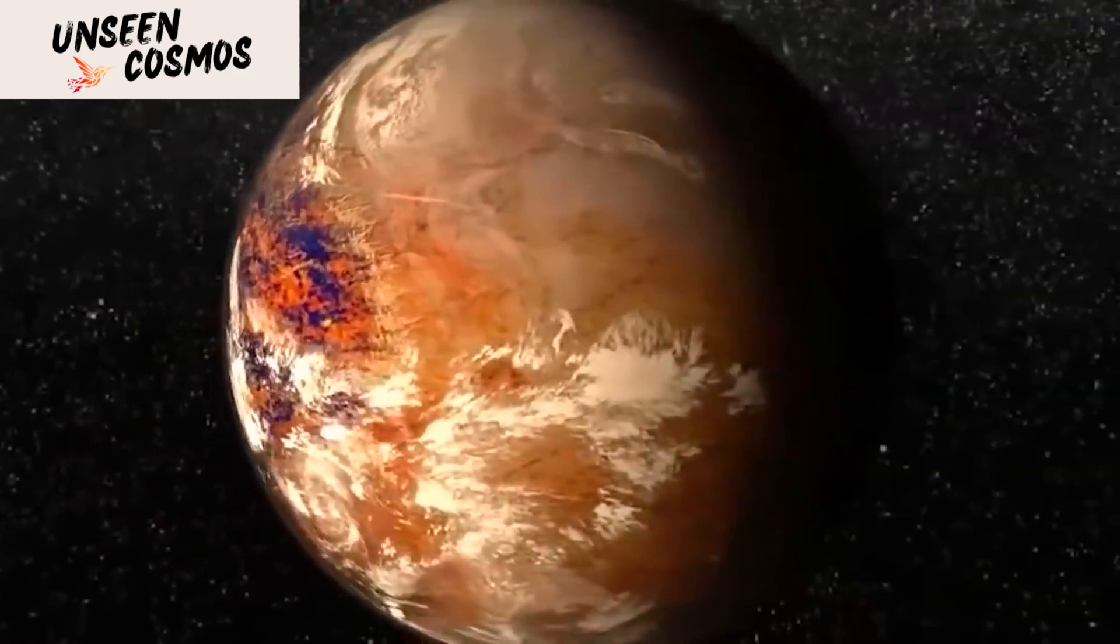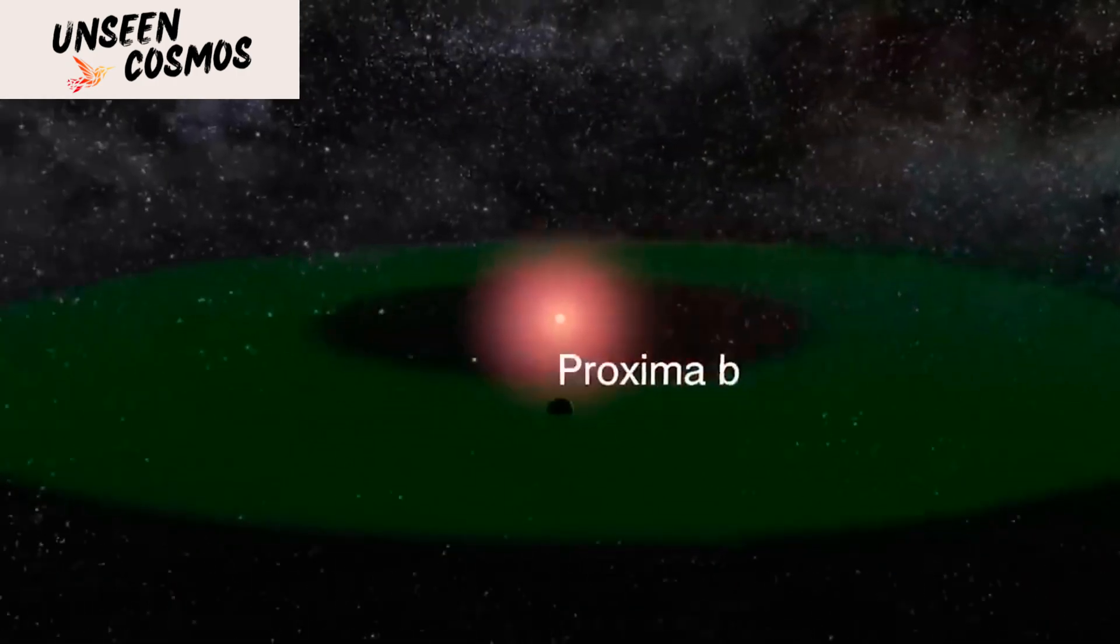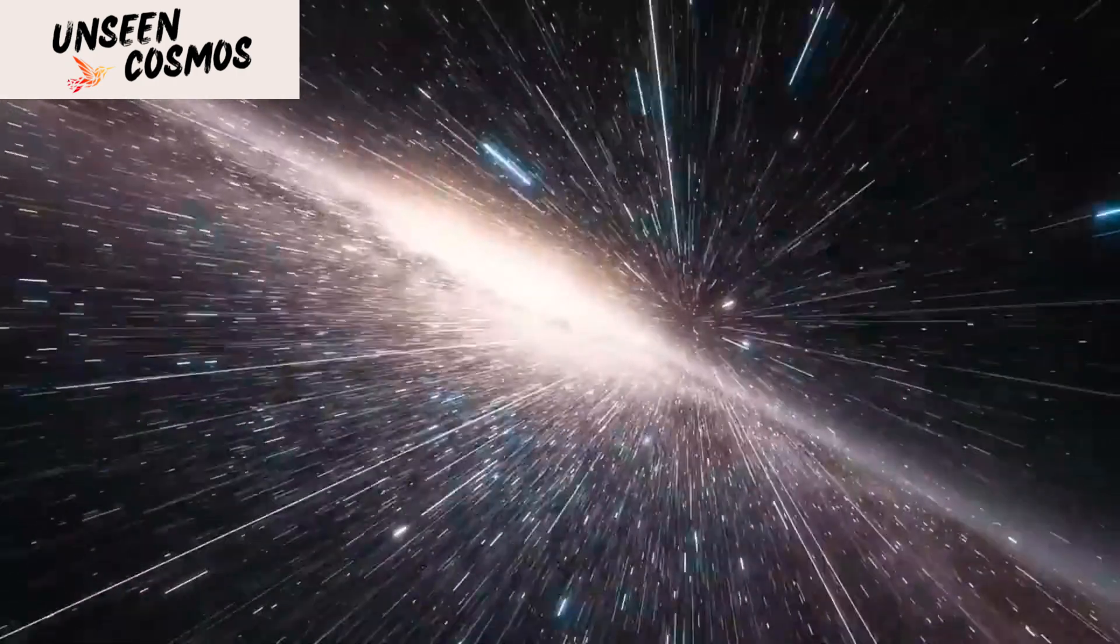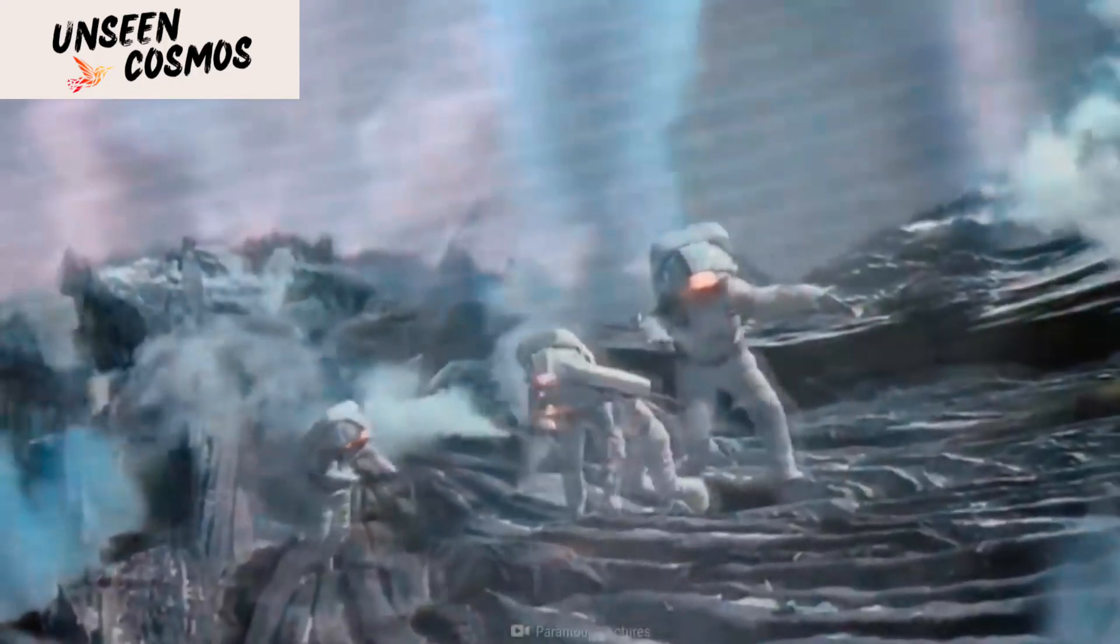It is important to note that this is just a simulation, and there is currently no direct evidence that there is an alien civilization on Proxima b. However, the possibility of detecting artificial light on exoplanets is an exciting prospect, as it could provide evidence of the existence of extraterrestrial life.